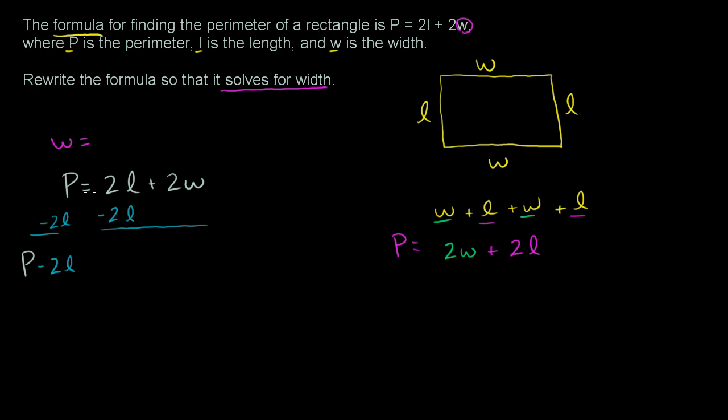So the left-hand side is going to be P minus 2l. And then that is going to be equal to, well, 2l minus 2l, the whole reason why we subtract the 2l is because these are going to cancel out. So these cancel out, and you're just left with 2w here.